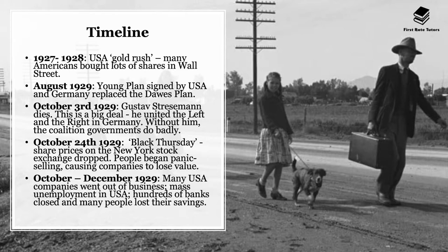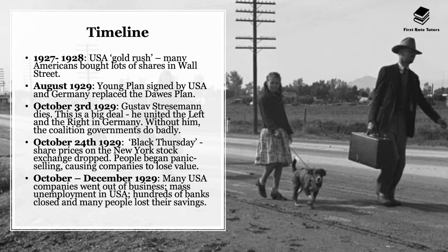This was happening as the American economy was shifting for the worse. On October 3rd 1929, Gustav Stresemann died. As discussed in our previous videos, Stresemann played an integral role in turning Germany's economic and political position around. He united left and right-wing parties in Germany, negotiated debts and payments from America to help Germany recover, and was a really important uniting force for politics in Germany.